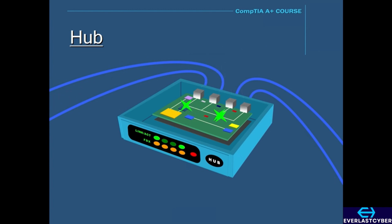There are two different types of hubs: passive and active. The difference is that a passive hub does not require power, but an active hub does require power.